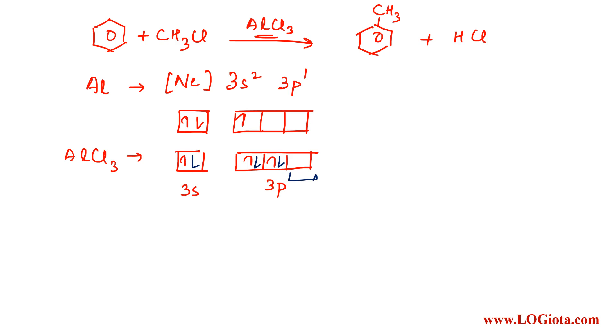So the structure of AlCl3 will be something like this, with the shared pair of electrons here.